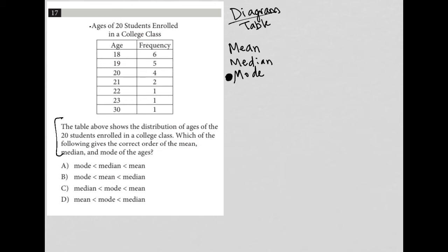The mode represents the value, in this case the age, that is represented the most out of the 20 students. And that would be 18. There's six out of the 20 students are 18 years old. There's no other age that has more than six students. So the mode is 18.